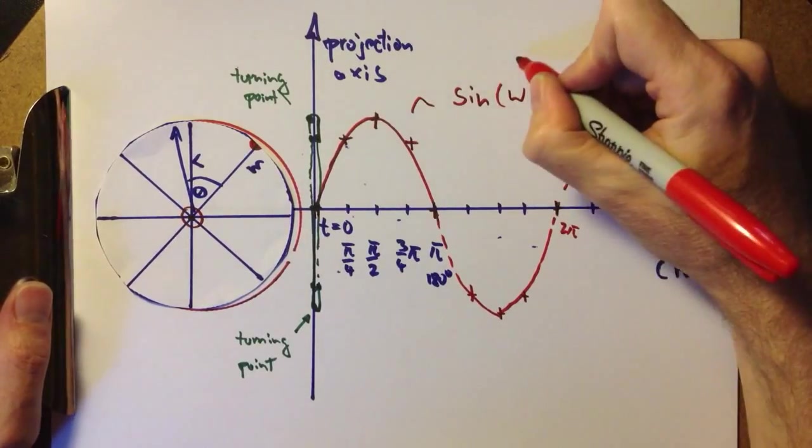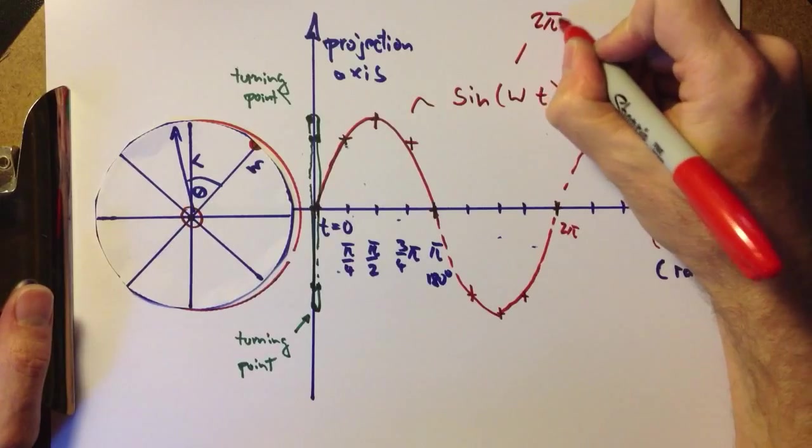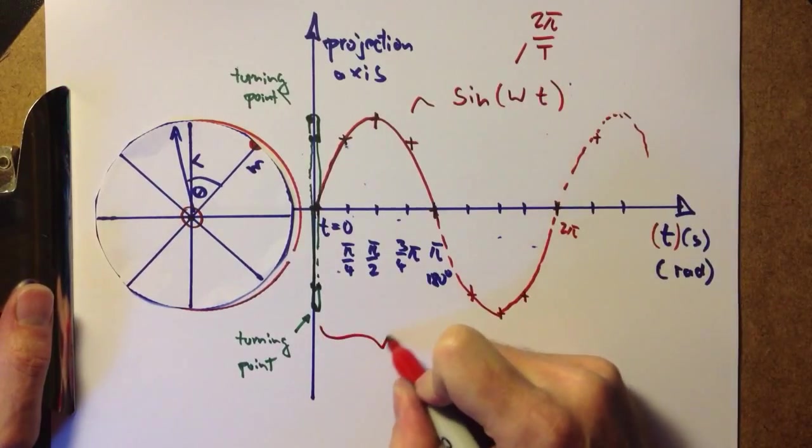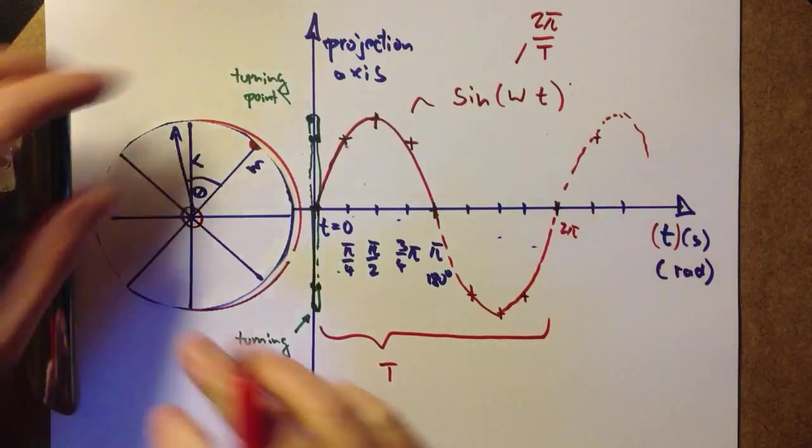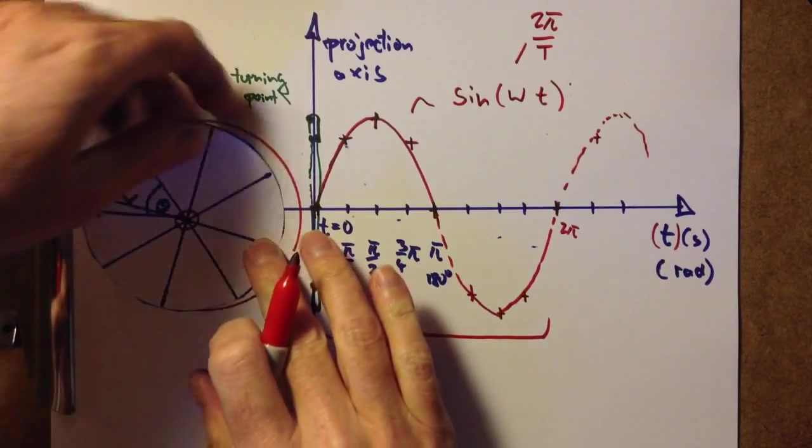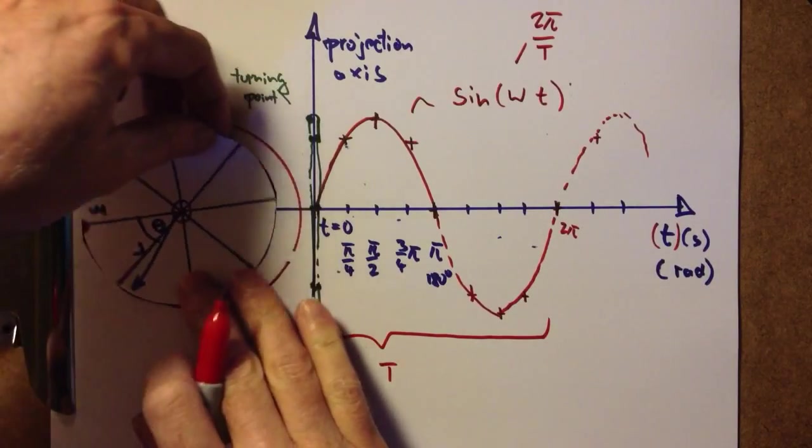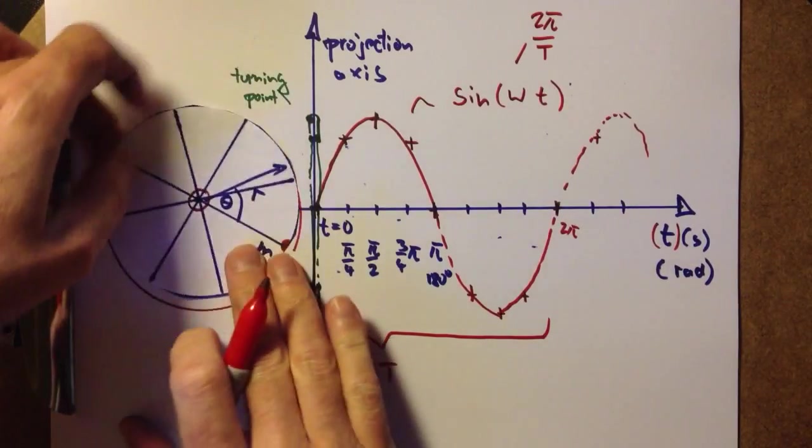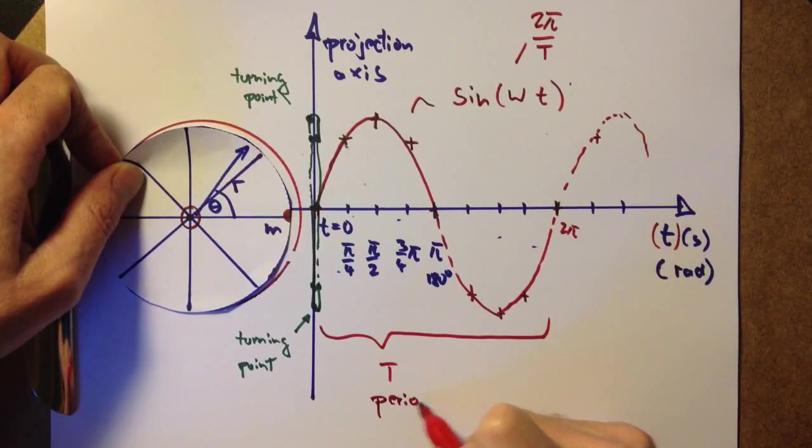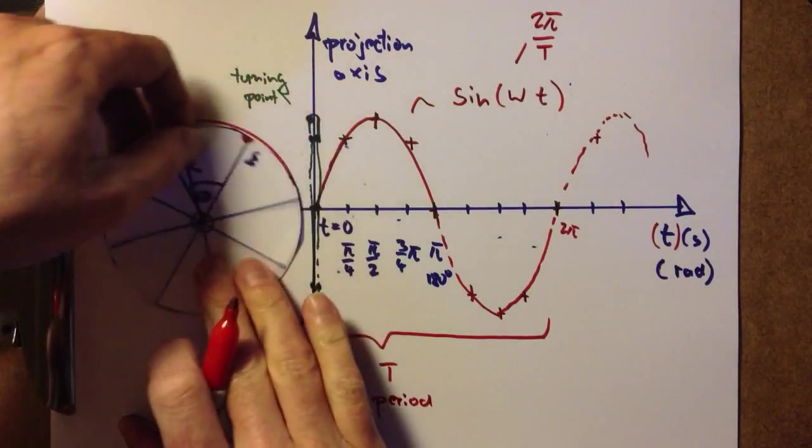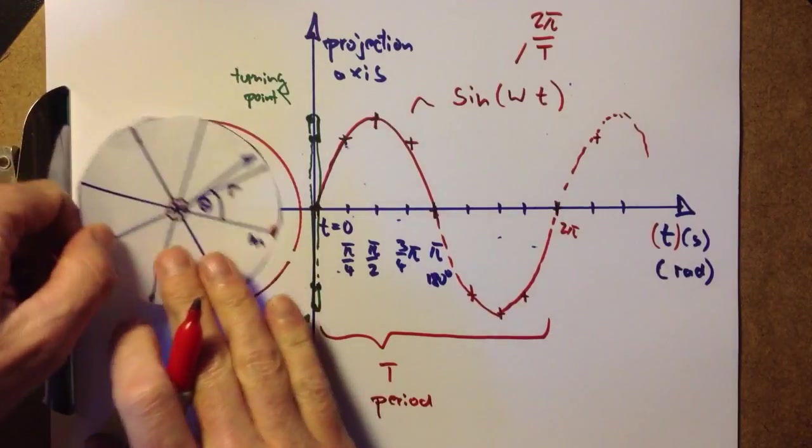And then ω is equal to 2π divided by a time T. And that time T is the time it takes for the entire turn, the entire path around the circle of our point mass, which we call the period. And in terms of radians, one entire turn, again, is 2π.